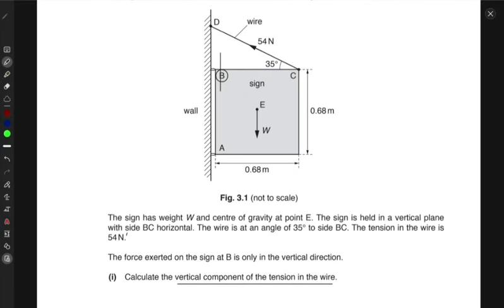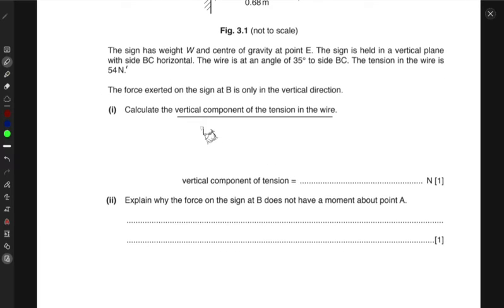So this is tension. It would have two components: one upwards as it's slanted upwards and it's going to the left, so one component would be in this direction. The vertical component of tension is this one. If this angle is 35 degrees then this is the sine component which is 54 sine 35 degrees. So the vertical component of the tension T is 54 newtons times sine 35 degrees which is 31 newtons.